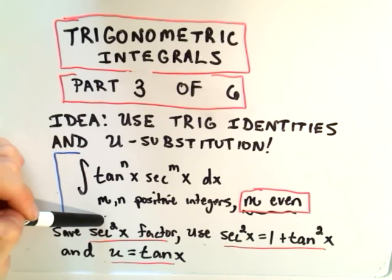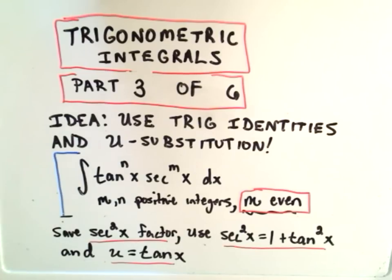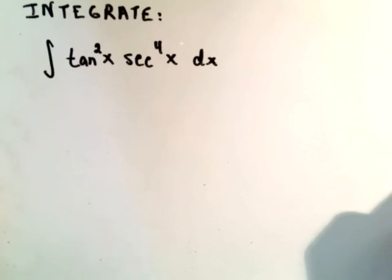The idea here, you're going to save a secant squared factor of x. We'll use secant squared as 1 plus tangent squared, and then simply the u-substitution of tangent x. So again, you're just using trig identities and u-substitution.